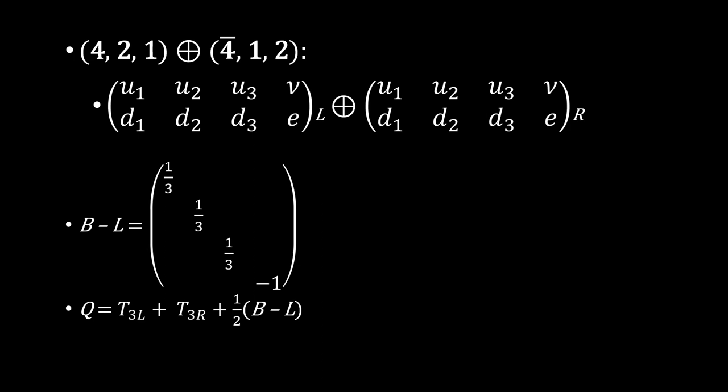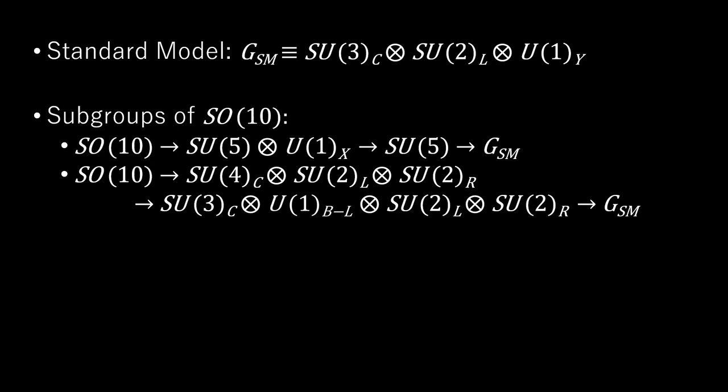SO(10) has two inequivalent maximal subgroups and hence breaking patterns: SO(10) goes to SU(5) cross U(1)_X and SO(10) goes to SU(4) color cross SU(2)_L cross SU(2)_R. Gauge coupling unification remains intact in the case for the breaking pattern SO(10) goes to SU(5).